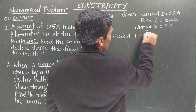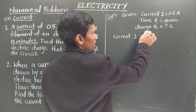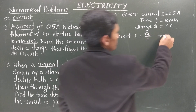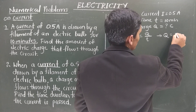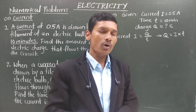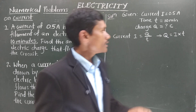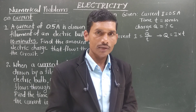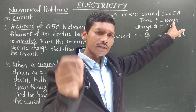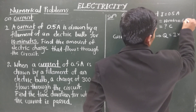From the formula i = q/t, since we need to calculate q, we rearrange to get q = i × t. One important thing to keep in mind: time is given in minutes, but the SI unit of time is seconds. So we must convert: 10 minutes × 60 seconds per minute = 600 seconds.